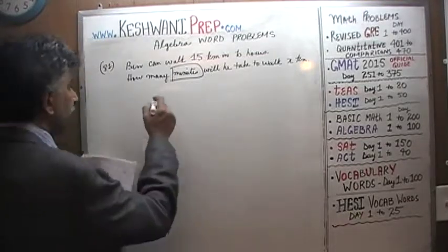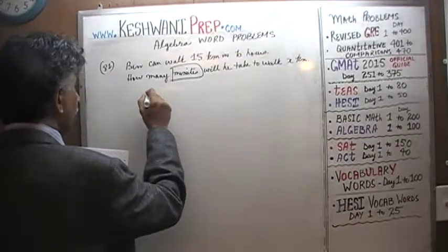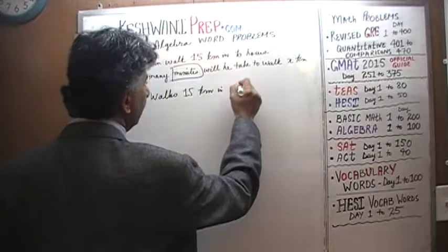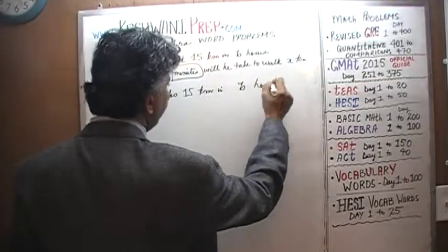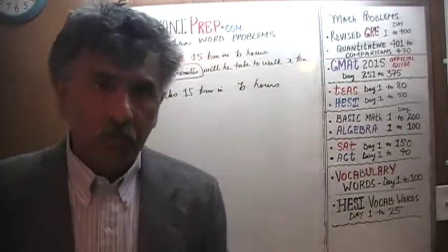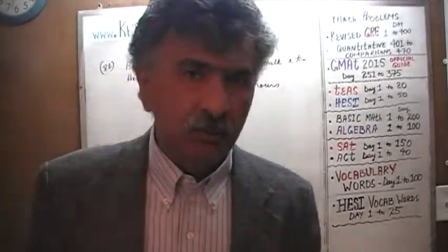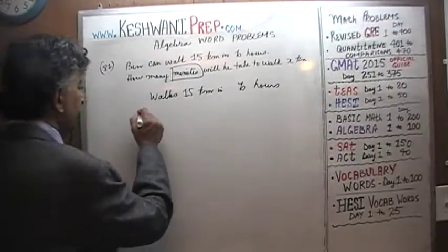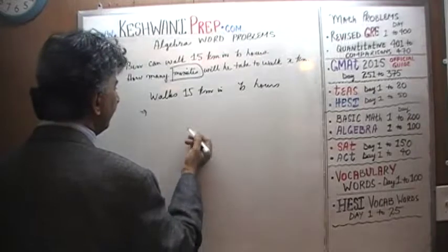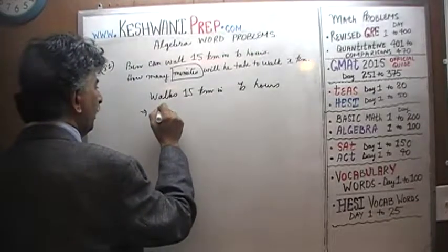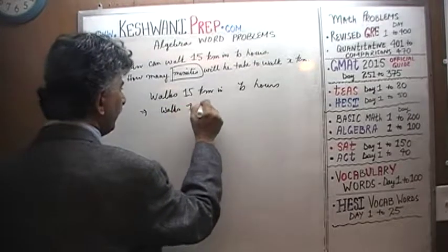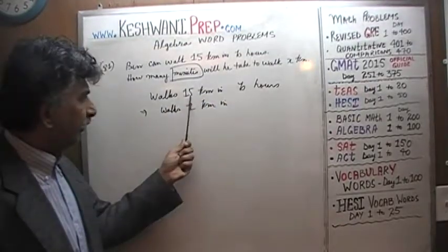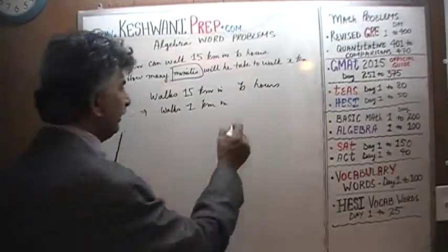Let's get going. So what do we know? We know that he walks 15 kilometers in B hours. That is something given to us. What can we deduce from it? Well, if he walks 15 kilometers in B hours, that implies he can walk 1 kilometer in B over 15 hours — because if 15 kilometers take that many hours, 1 kilometer should take one-fifteenth of that amount of time.